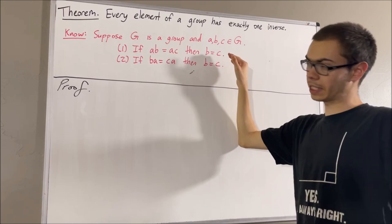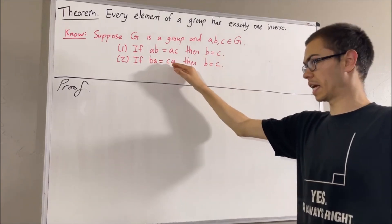If ab equals ac, then b equals c. If ba equals ca, then b equals c.